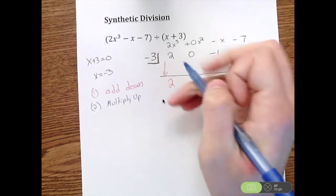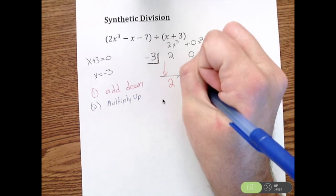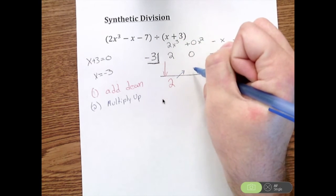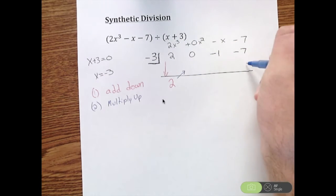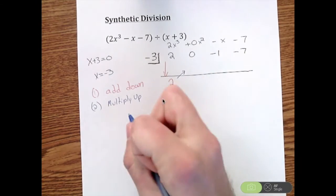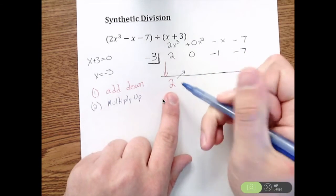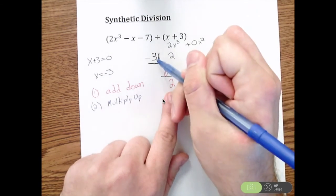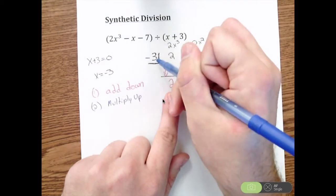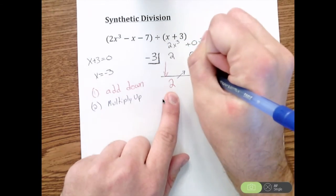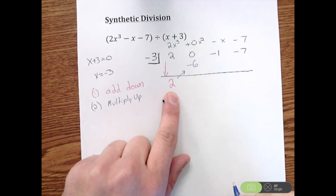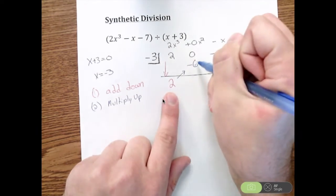Next thing I need to do is multiply up. So we're going to go down, then go diagonal up, down diagonal up, down diagonal up. To go up we're going to multiply up, so we're going to take this 2 and multiply it by negative 3. So 2 times negative 3 is negative 6. So we add down, multiply up, and we're going to repeat this process until we get through the entire row.